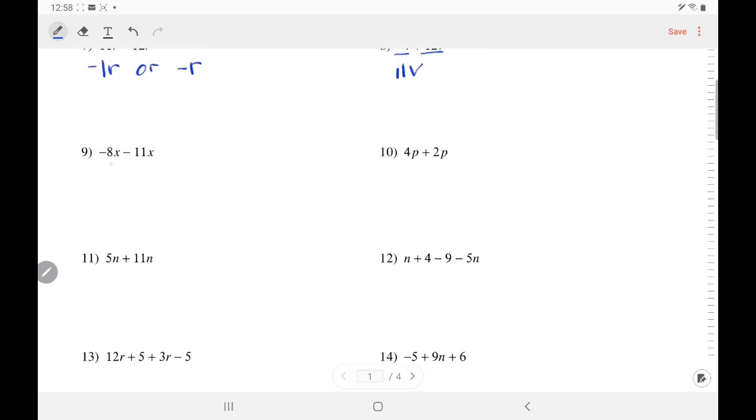Here, add two negative numbers. It got even more negative. 8 and 11 is 19x. This one is easy. 4 plus 2 is 6p.